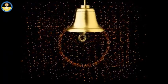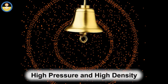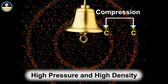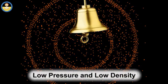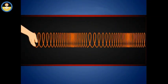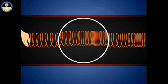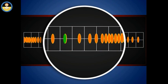When a vibrating object moves forward, it pushes and compresses the air in front of it, creating a region of high pressure and high density called compression. This compression starts to move away from the vibrating object. When the vibrating object moves backward, it creates a region of low pressure and low density called rarefaction. When the object moves back and forth rapidly, a series of compressions and rarefactions is created in the air. In this way, sound propagates in the medium.